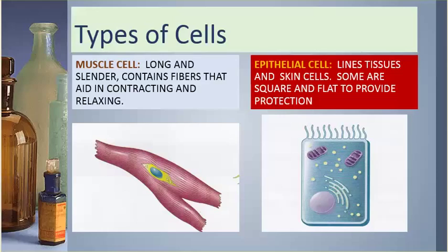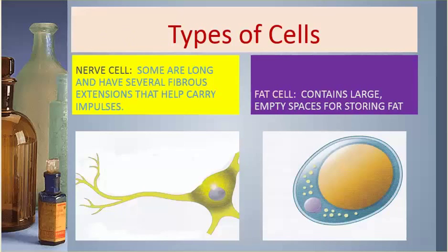Muscle cells are long and slender and contain fibers that aid in contracting and relaxing. Epithelial cells line tissues and skin; some are square and flat to provide protection. Nerve cells are long and have several fibrous extensions that help carry impulses. Fat cells contain large empty spaces for storing fat.